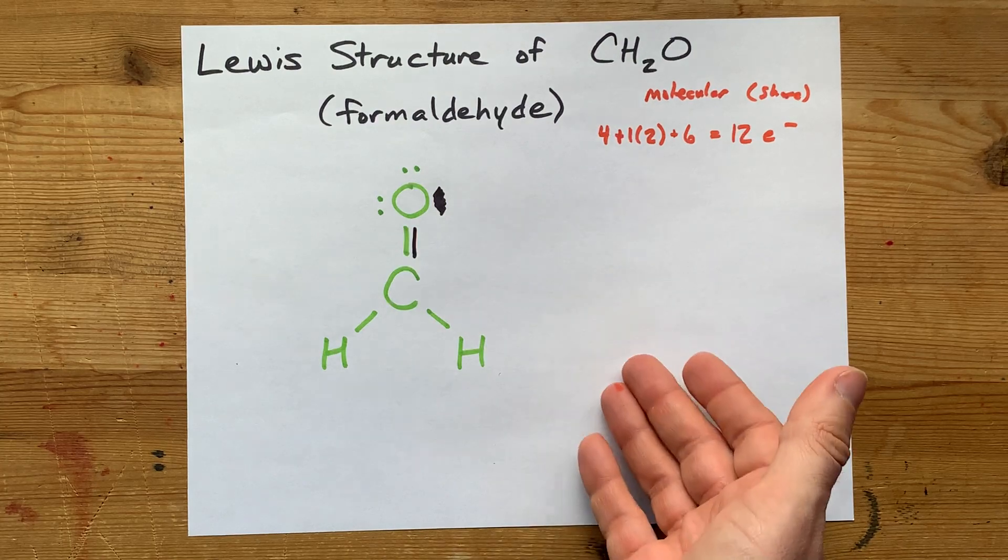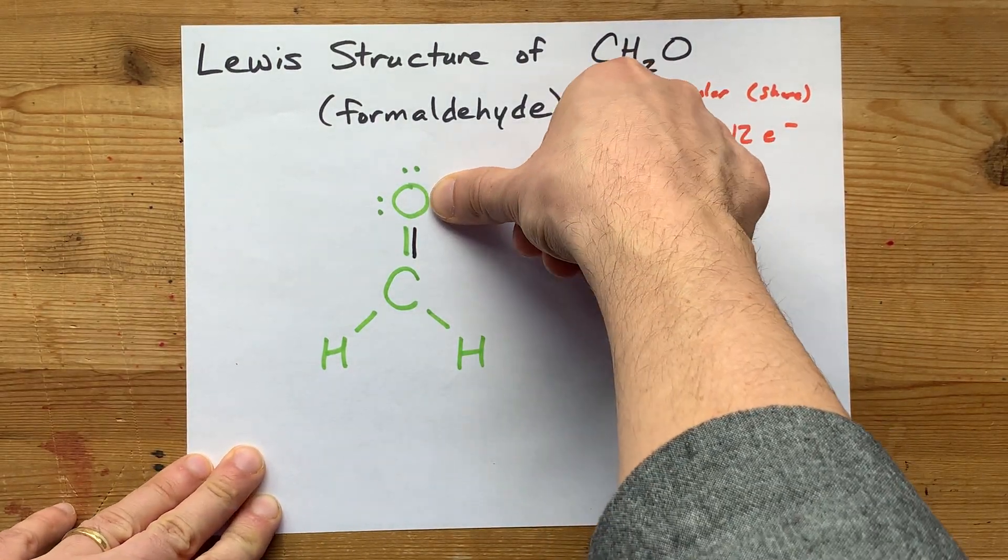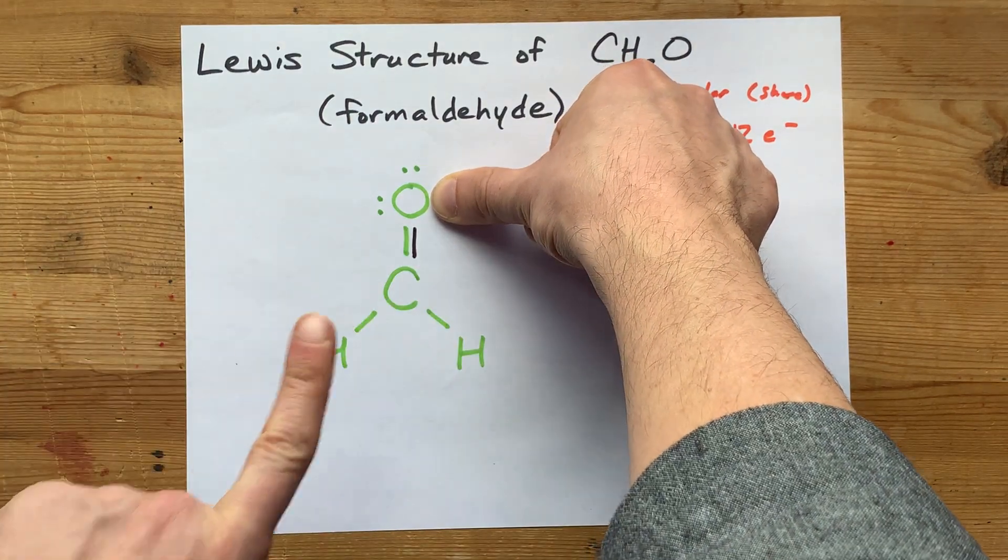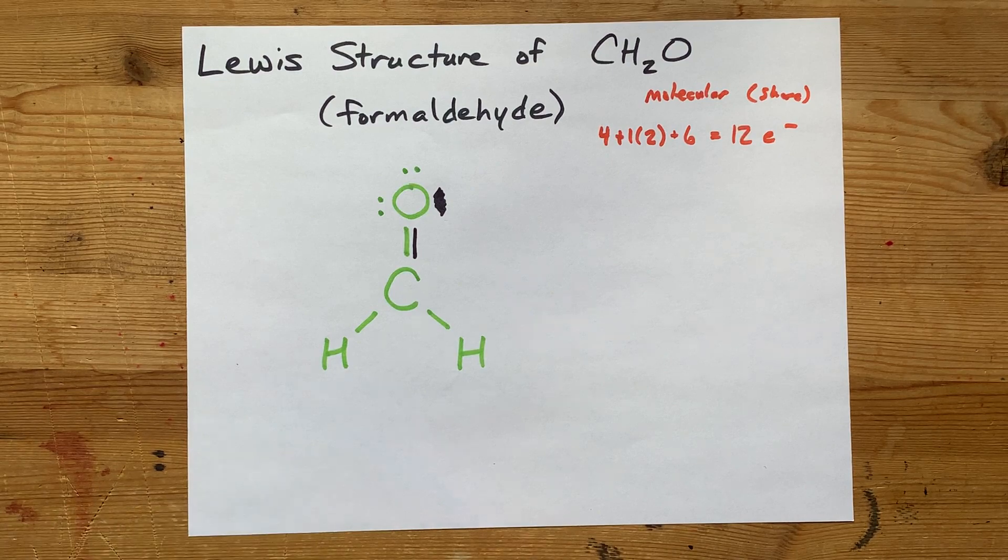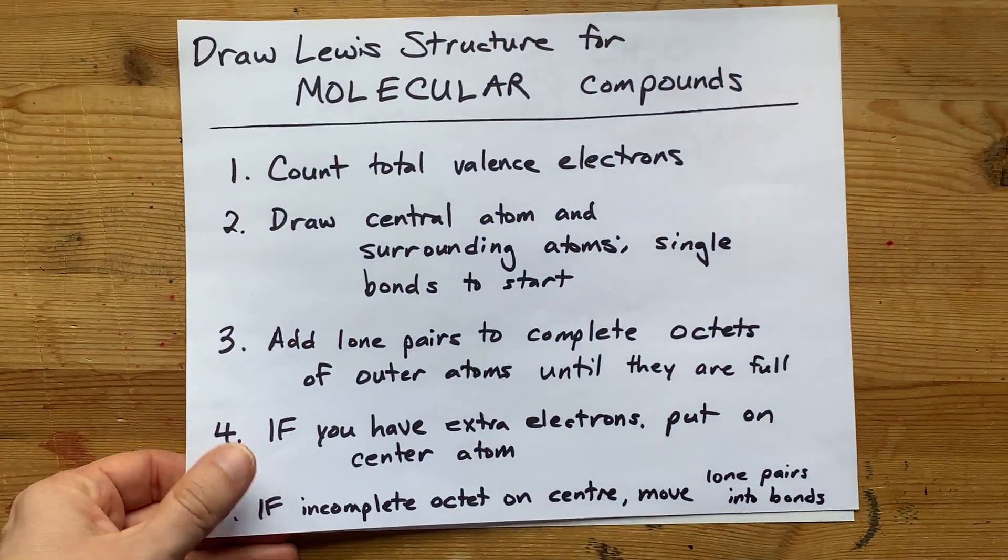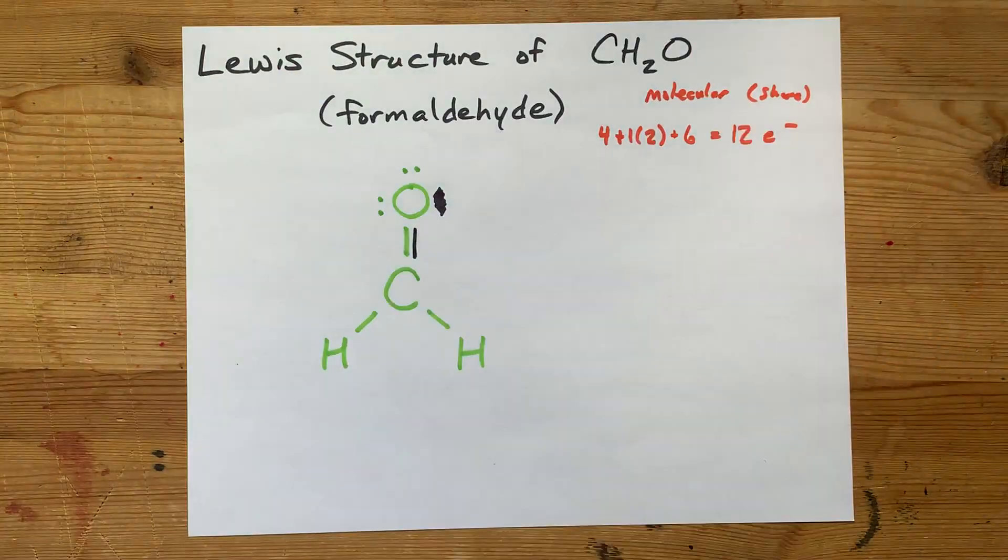Congratulations, you drew it. I verify for you, this is definitely the Lewis structure. Obviously, you would have used an eraser to get rid of those. That's the completed Lewis structure. And congratulations, use this method to draw the Lewis structure for any molecular compound. Thanks for being with me, and best of luck.